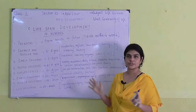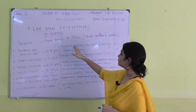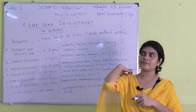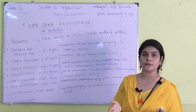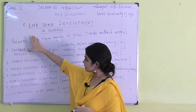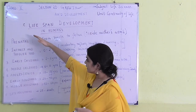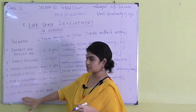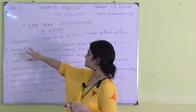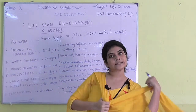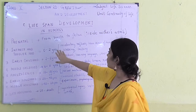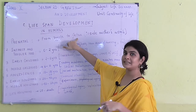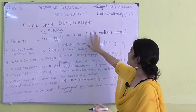We have come to the part of the video where we will be learning about lifespan development in humans — the different phases of development in humans. The entire lifespan of a human is divided into eight stages. The first stage is the prenatal stage, which is basically inside the mother's womb — the journey from being a zygote to a fetus until coming out of the body.